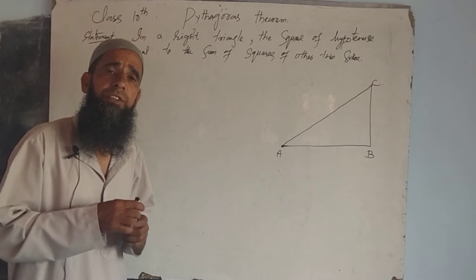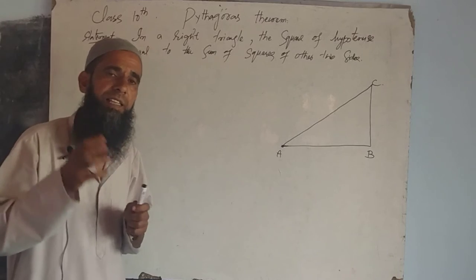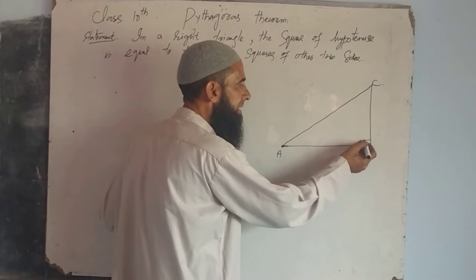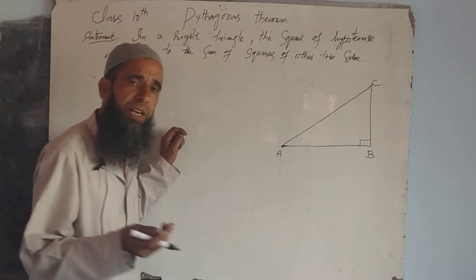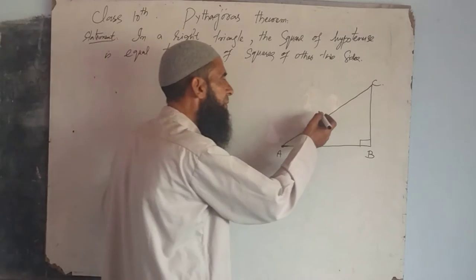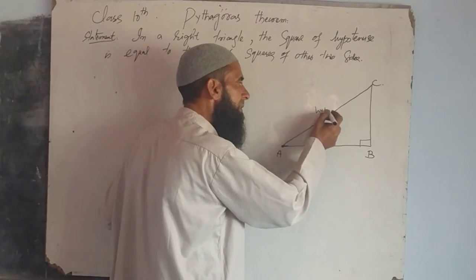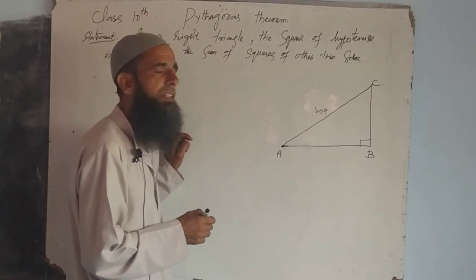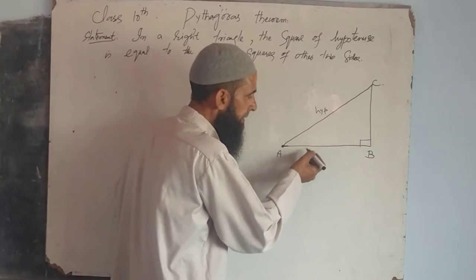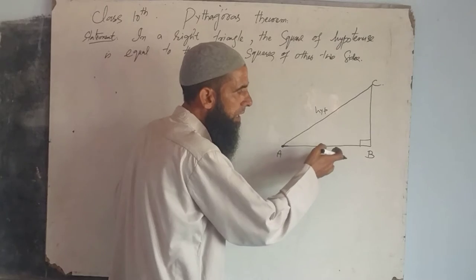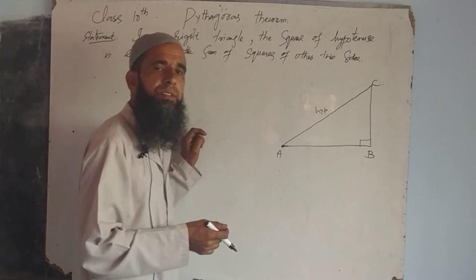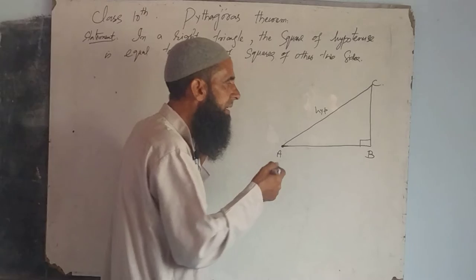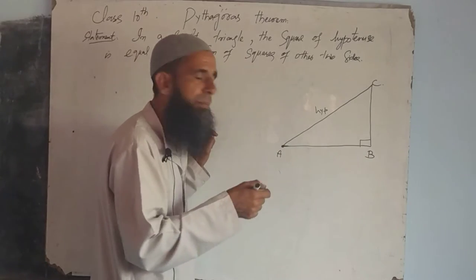Dear students, you know that we have a right-angled triangle. If we have a right-angled triangle, then we will have a hypotenuse. The side opposite the right angle is the hypotenuse, and the other two sides are taken as the base and the altitude.